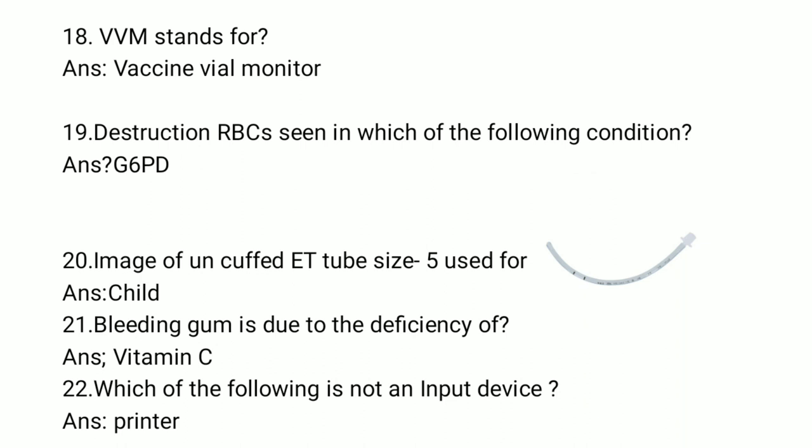Bleeding gum is due to the deficiency of which vitamin? The answer is vitamin C. This condition is seen in scurvy — deficiency of vitamin C causes bleeding gums. Which of the following is not an input device? The answer is printer.